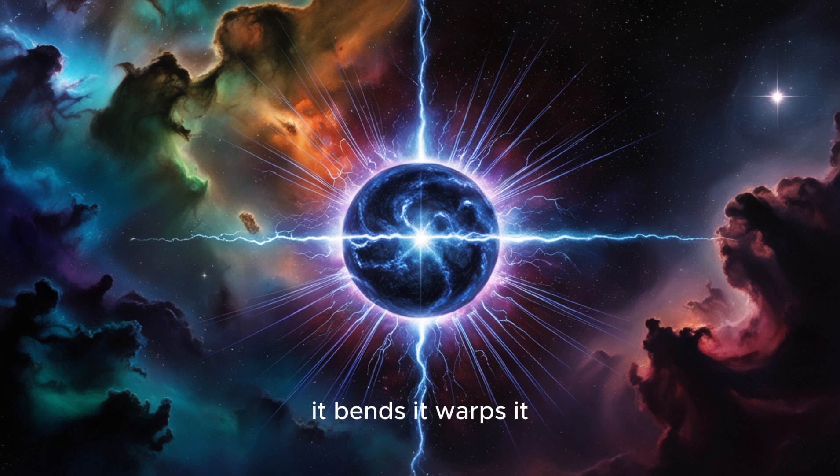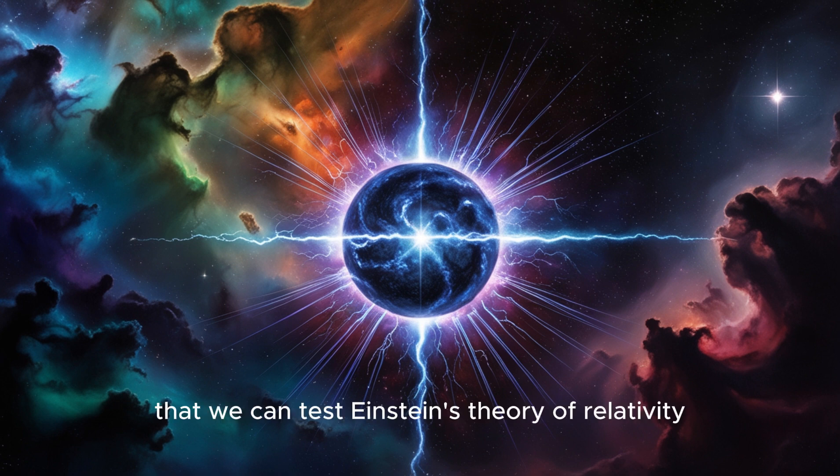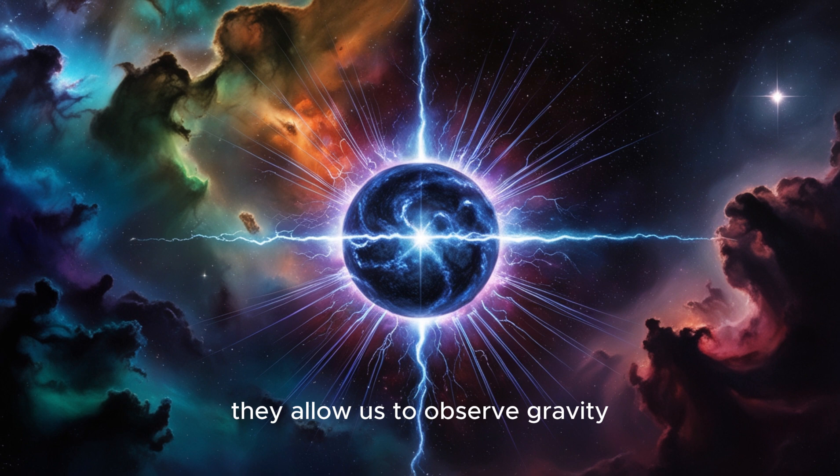The gravity well becomes so deep that it literally distorts the fabric of space and time around it. It bends it, warps it. So light, time, everything gets bent and shaped near a neutron star. Exactly. And that's actually one of the ways that we can test Einstein's theory of relativity.